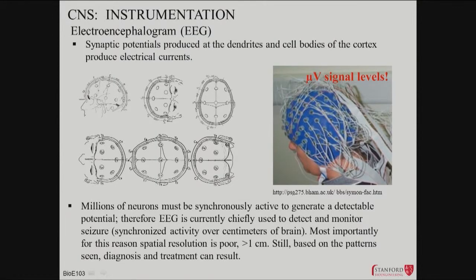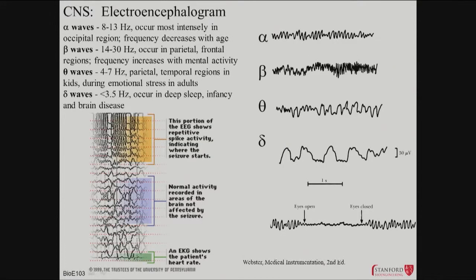EEG is much simpler, with a little bit less resolution — it basically uses a shower cap with a lot of wires on it. Because both of these are extracellular, they can only pick up synchronous activity from millions and millions of neurons firing together. You can barely pick up a signal at the surface of the brain, but you get centimeter resolution and very high temporal resolution. You can see different oscillations — these are brainwaves at different frequencies: alpha, beta, theta, delta.